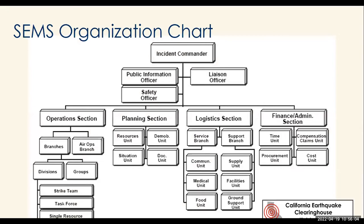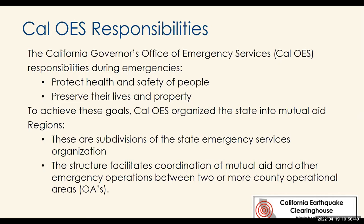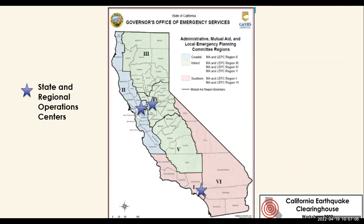This SEMS organization chart shows that the earthquake clearinghouse and technical specialists fall into the planning section — not the operations section. They are not field forces deployed in response to the emergency itself. The California Governor's Office of Emergency Services responsibilities are to protect the health and safety of people, preserve lives and property, and the structure facilitates coordination between counties. Cal OES has regions and coordinates resources within those regions, getting the closest resources to where they're needed — rather than taking resources from Southern California and sending them to Shasta or Modoc.